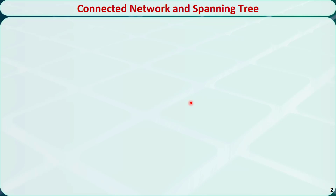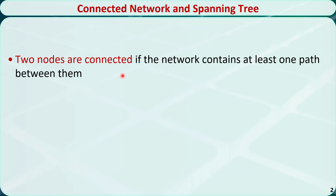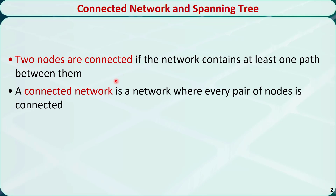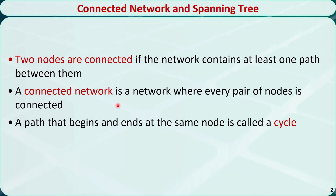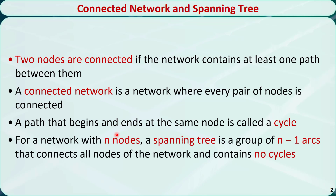Let's see some definitions. Two nodes are connected if the network contains at least one path between them. A connected network is a network where every pair of nodes is connected. The path that begins and ends at the same node is called a cycle. For a network with n nodes, a spanning tree is a group of n-1 arcs that connects all nodes of the network and contains no cycles.